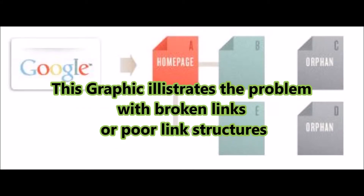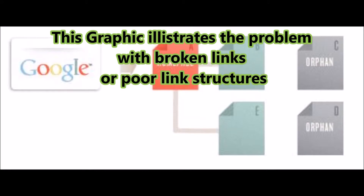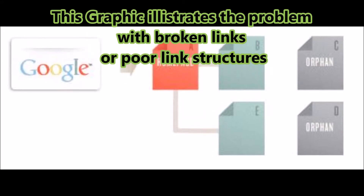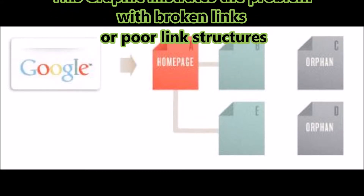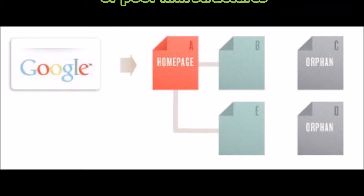Google spiders find your home page and see the links to B and E, but without links to C and D, the spiders have no way of reaching, reading, or knowing that C and D even exist. So your important information may never be indexed.